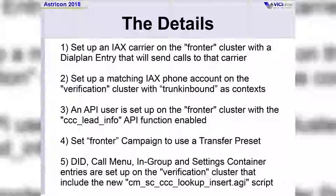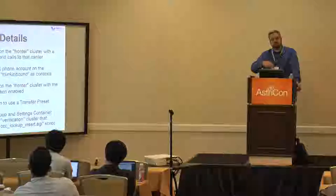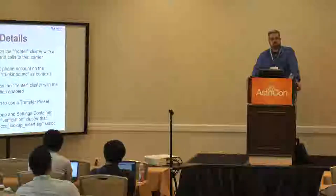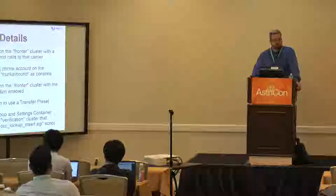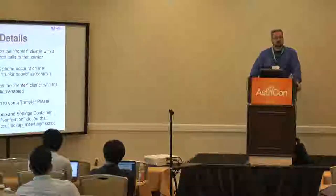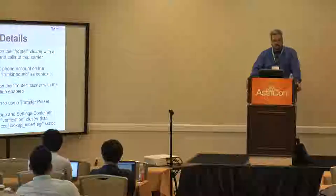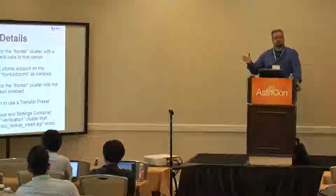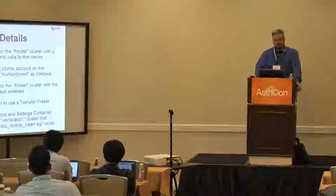We use IAX to connect between servers and we're also going to be using that same trunking technology to connect between the clusters. First, you set up an IAX carrier on the fronter cluster with a dial plan entry. The fronter cluster is going to act as a carrier sending an inbound call to the closer or verification cluster through an IAX phone account on the verification cluster that's set up to use trunk inbound, which is our default DID routing trunk inside of VICIdial. We created a couple of new API functions, so you'll need to create an API user to be able to share customer data from the fronter cluster.